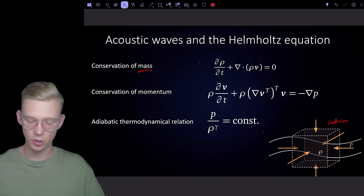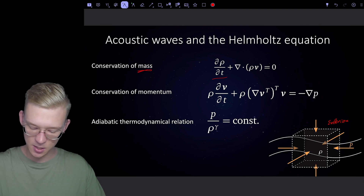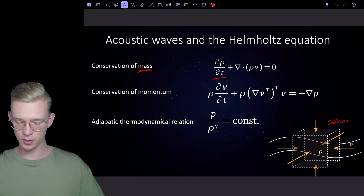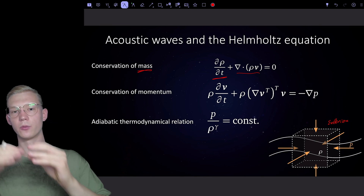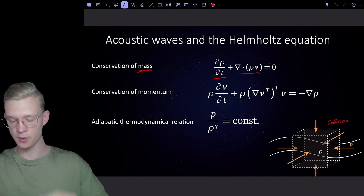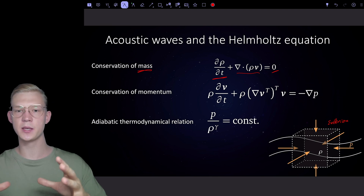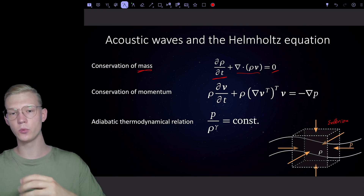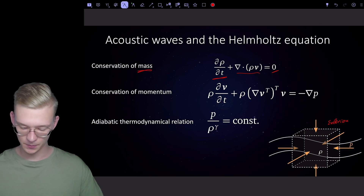First of all, we have conservation of mass: a change of our density at that point plus the change of our density because we are moving from one space to another is equal to zero. This is basically saying that if mass is flowing in, we either have to increase density or mass has to flow out.